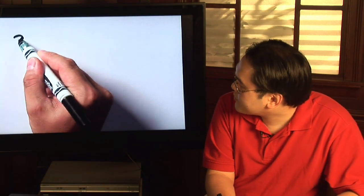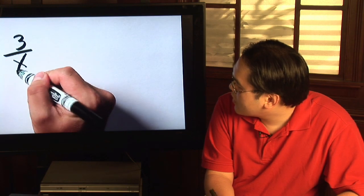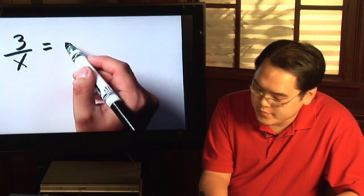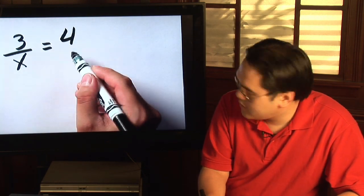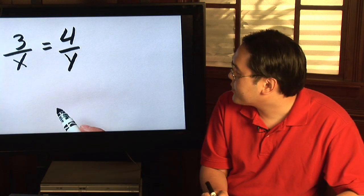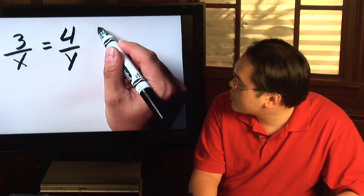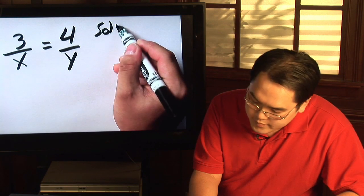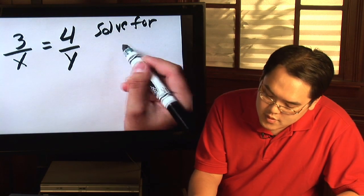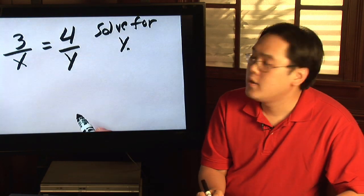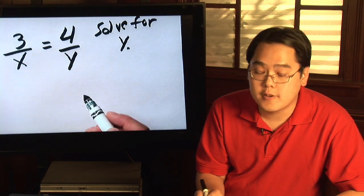Suppose you have one proportion, 3 over x equals 4 over y. Now let's just suppose your directions are solve for y. So that means you have to get y by itself.